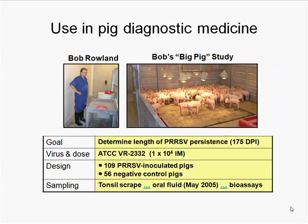On the pig side, when we started out I wasn't really aware of any of the human diagnostic work. On the veterinary side we hadn't looked at oral fluids at all. We began looking at oral fluids because of an experiment — Bob Rowland at Kansas State was PI. We were doing the work at Iowa State, following 109 pigs infected with PRRS virus over time, looking at the rate of persistence, and discovered you could recover infectious virus 175 days after inoculation.